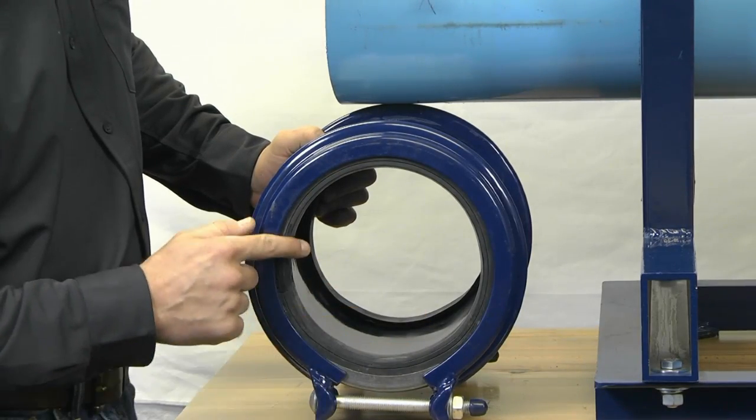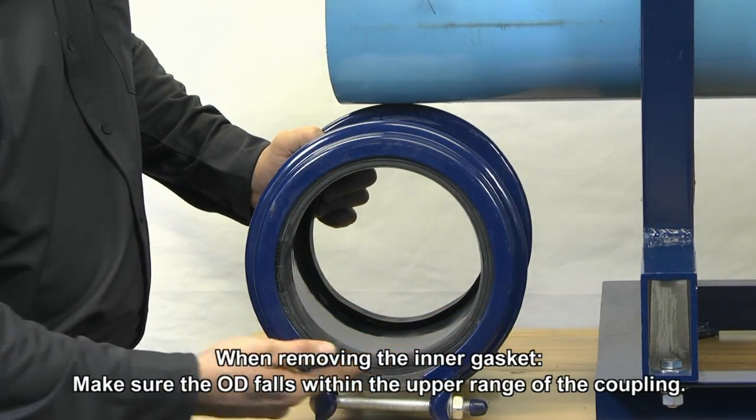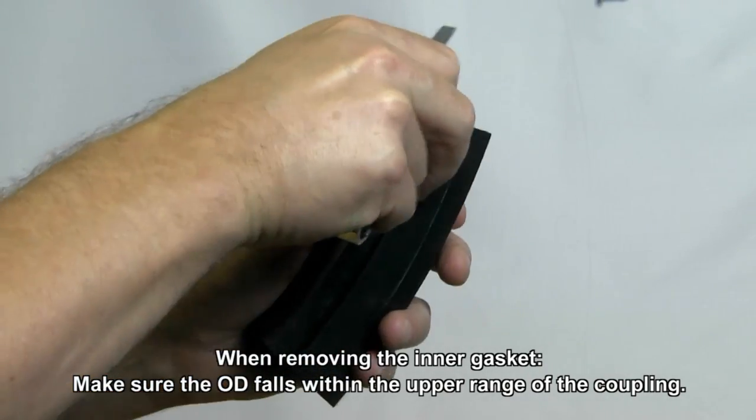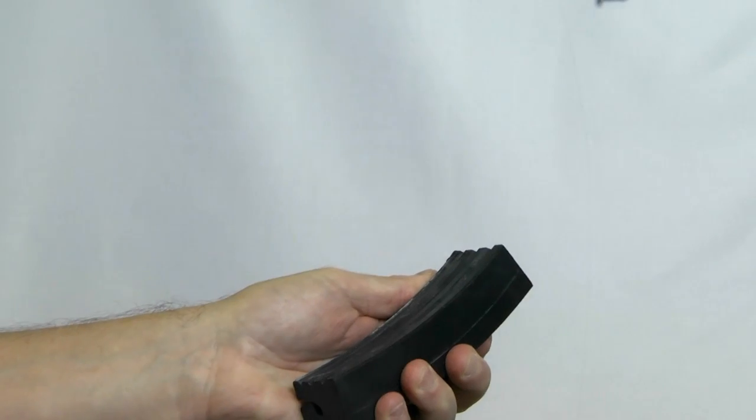The coupling's gasket system has two layers, a removable inner gasket and a hydraulically assisted outer gasket. The inner gasket can be removed to accommodate larger OD pipes.